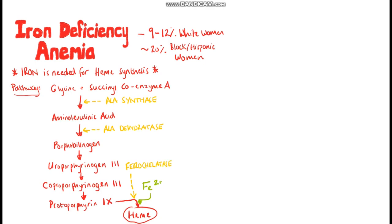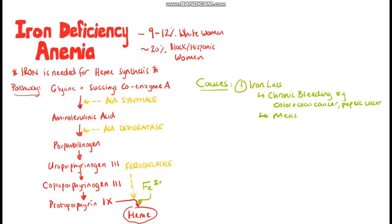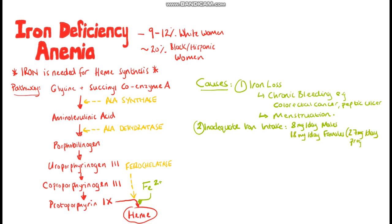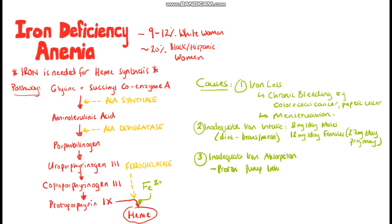So if you don't have enough iron, you can't produce enough heme, and therefore not enough hemoglobin. Causes for iron deficiency include iron being lost, such as in chronic bleeding from colorectal cancers, peptic ulcers, or menstruation. You can also end up iron deficient from an inadequate intake — the requirement is normally around 15 mg a day depending on age and sex: about 8 mg for adult males, 18 mg for adult females, and up to 27 mg during pregnancy. Poor absorption is also a cause, as iron needs acid to be absorbed properly, so people using proton pump inhibitors or patients with a gastrectomy are at risk.